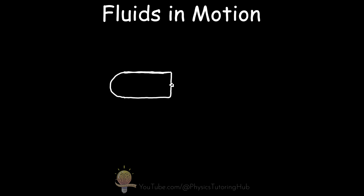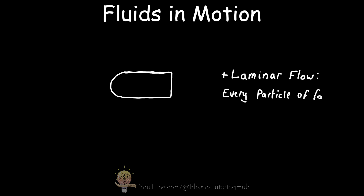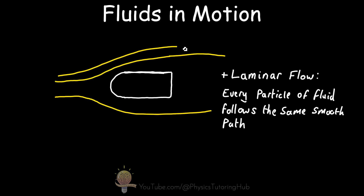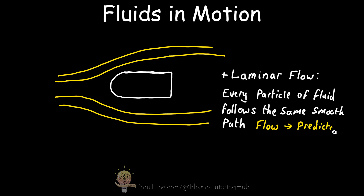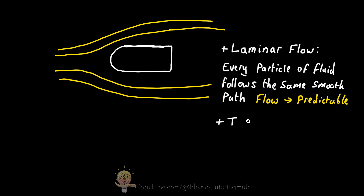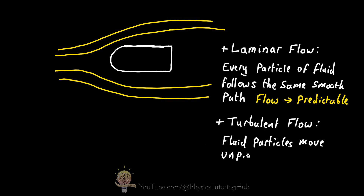When a fluid such as water is in motion, the flow can be characterized in one of two ways. We can have laminar flow, where every particle of fluid follows the same smooth path every single time, and therefore the flow is predictable. In contrast, turbulent flow is where fluid particles move unpredictably and collide and mix together.